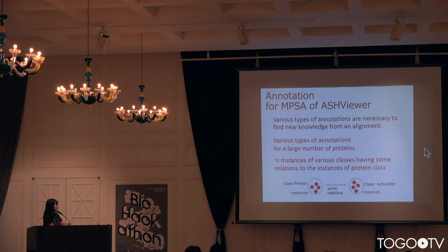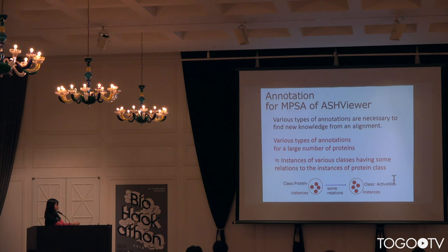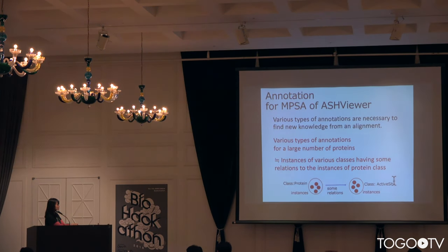For AshViewer, various types of annotations are necessary to find new knowledge from an alignment. We considered various types of annotations for a large number of proteins as instances of various classes having some relation to instances of a protein class. For example, for instances in the protein class, an annotation the user would like to have is, for example, the active site — so there should be some relationship from instances to instances.